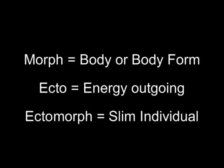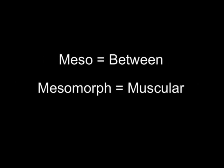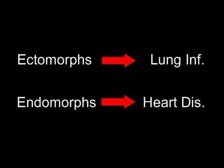Morph means body or body form. Ecto means all energy is outgoing, so an ectomorph means a slim individual. Endo means all energy is stored inside, so an endomorph is a broad individual. Meso means in between, so a mesomorph — the body type between the two others — is a muscular type. Ectomorphs are more susceptible to lung infections; endomorphs are more susceptible to heart disease.